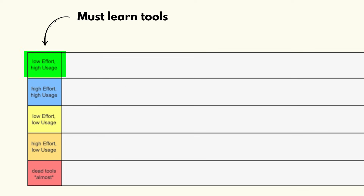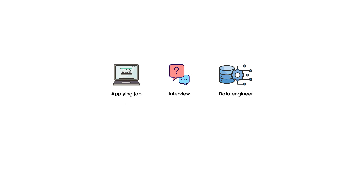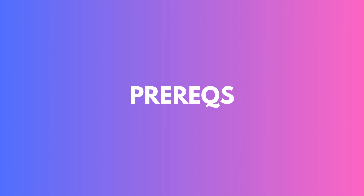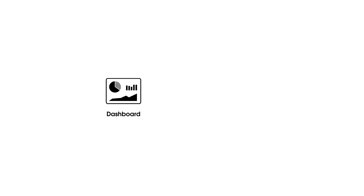The green zone tools are must-learn tools, and the blue zone tools are trending across job titles. I'm rating these tools based on my personal experience of applying to jobs, interviewing, and working in data engineering for almost three years now. Before the prerequisites, let's talk a little bit about data engineering. Data engineering is all about creating pipelines that move raw data to where it's actually useful — think dashboards, machine learning models, and your favorite apps.